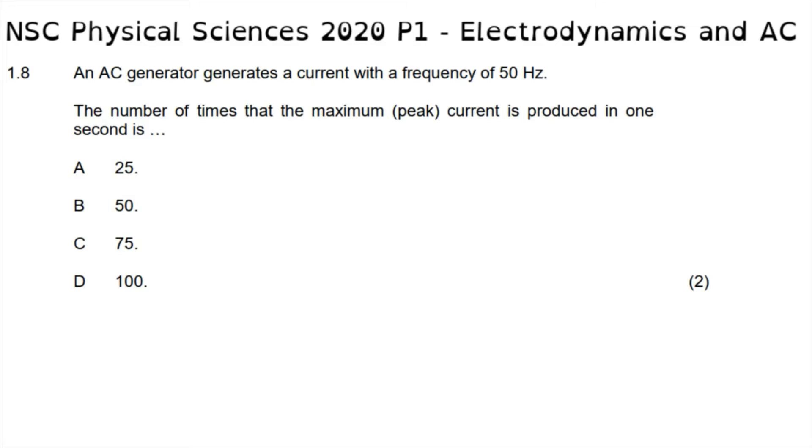The Electrodynamics and Alternating Currents section of the physics paper starts with multiple choice question 1.8, which reads: an AC generator generates a current with a frequency of 50 hertz. The number of times that the maximum or peak current is produced in one second is...